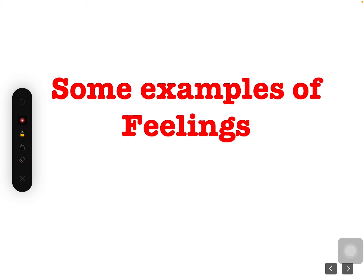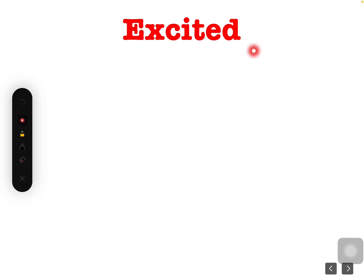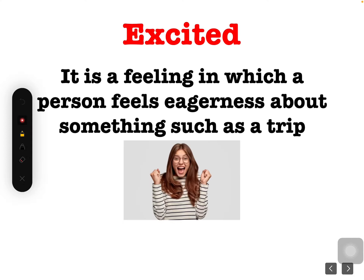So we have some examples of feelings. Number one, it is excited. Can you read? Excited. Repeat after me: excited. What is excited? It is a feeling in which a person feels eagerness about something, such as a trip. Look at the picture — this is a picture of a person that is excited. Maybe she is excited for the outing, excited for the project, excited to go to school.